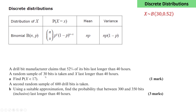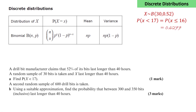We're asked to find the probability that x is less than 17. The probability that x is less than 17 will be the probability that x is less than or equal to 16, because we have a discrete distribution. When we use our calculator, the cumulative distribution is based on calculating the probability that x is less than or equal to some bound. This equals 0.6277.